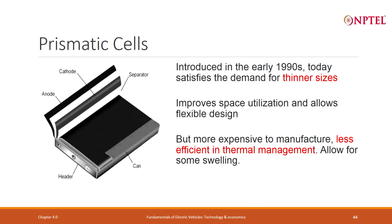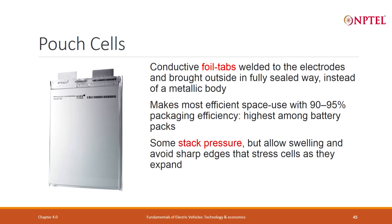Another problem with prismatic cells is that when charging fast, they tend to swell. Swelling can be very problematic — if it swells beyond a certain point, the life cycle is finished. You have to compress it to the right pressure: too much pressure and the life cycle is gone immediately; too little pressure and it swells, making life cycle go bad. You have to design it with very precise pressure.